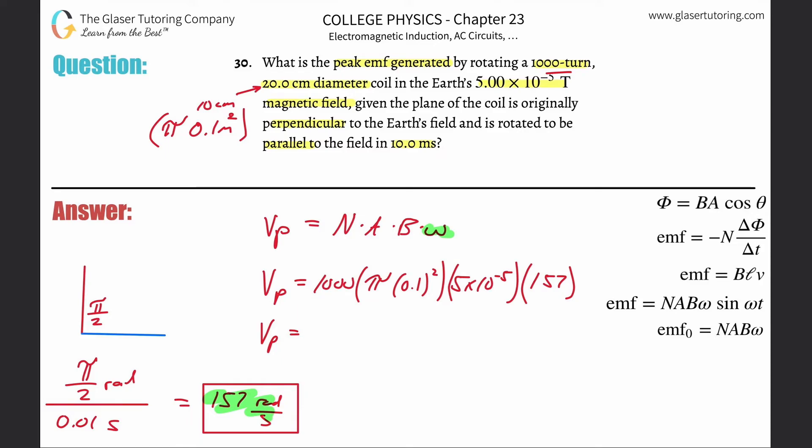And all we now need to do is calculate. I'm going to use that exact number of 157.079. So we're going to take that, multiply it then by 1,000, then multiply that by pi, and then multiply that by 0.1 squared, and then multiply that by 5 times 10 to the minus 5th. And here we go. 0.247 volts, and that's it.